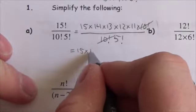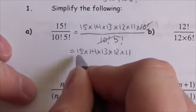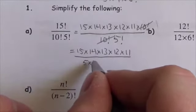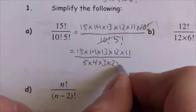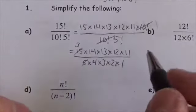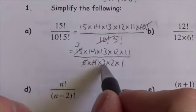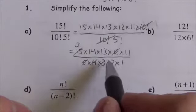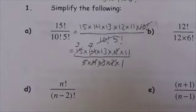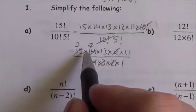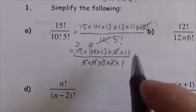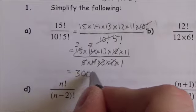Now I expand 5 factorial as 5 times 4 times 3 times 2 times 1. Then I cancel: 15 divided by 5 leaves 3; 4 times 3 cancels with 12; and 14 divided by 2 is 7. So I'm left with 3 times 7 times 13 times 11, which gives 3,003.